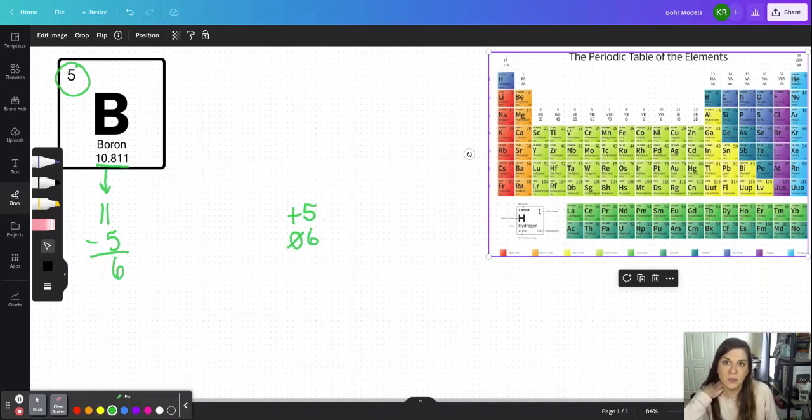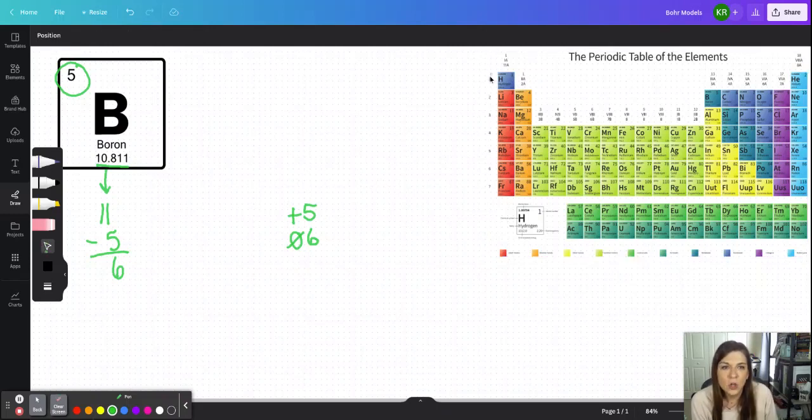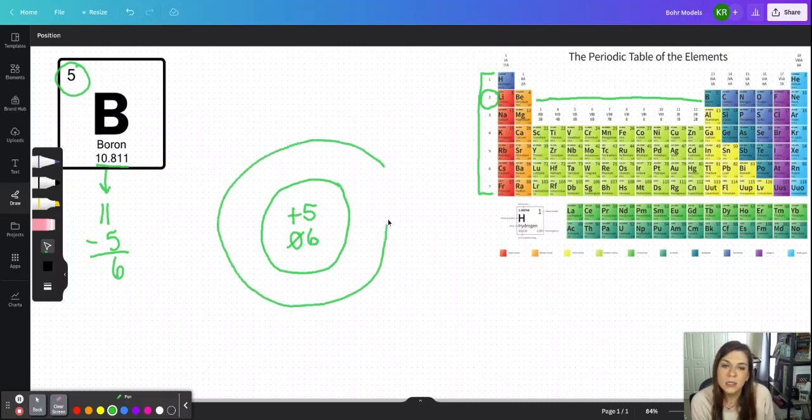The next thing is going to be to determine the number of energy levels or electron levels that I have in an atom of boron. This period number along the edge here is not an accident. The period on the periodic table corresponds to the number of electron energy levels that that particular atom has. In an atom of boron, you can see that it is a member of period two, meaning that boron has two electron levels. Here's the first, and here is the second.